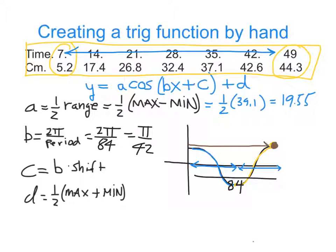Our cosine curve typically starts on the y-axis. This one has a high point, though, that takes off from this x-coordinate here, which is 49.